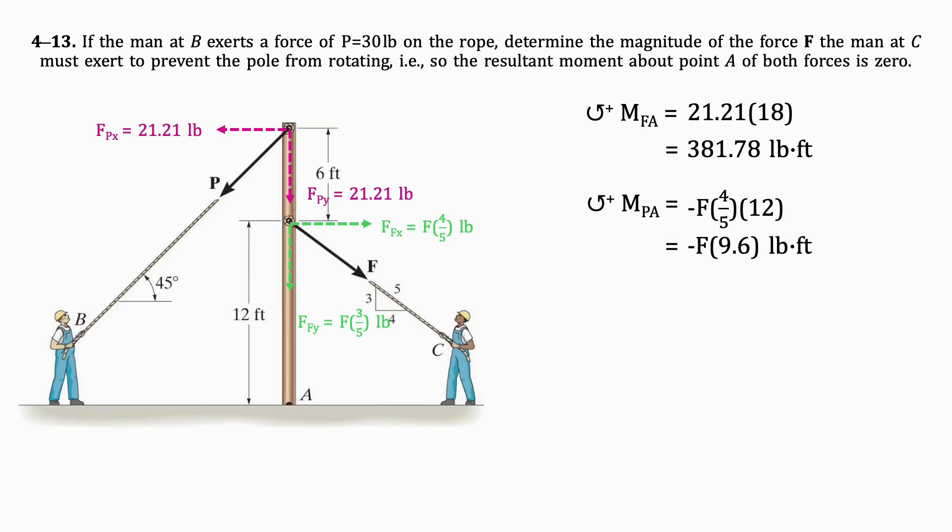Now we can solve for F. Knowing the resultant moment should be equal to zero, the sum of the two moments must equal zero so we can write the following equation. By isolating for F, we get that it equals 39.8 pounds.